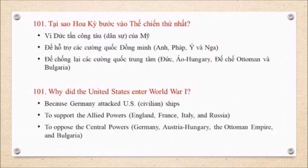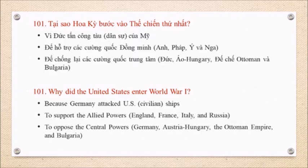Question 101: Why did the United States enter World War I? Because Germany attacked U.S. civilian ships. To support the Allied Powers — England, France, Italy, and Russia. To oppose the Central Powers — Germany, Austria-Hungary, the Ottoman Empire, and Bulgaria.